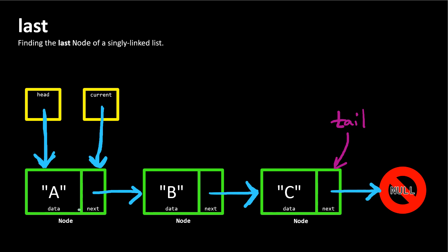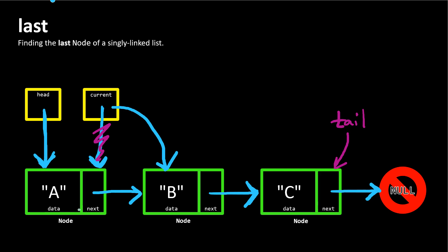We need to check: is this the tail node? We would ask, is current's next property null? In this case, it's not — it refers to another node. So because current's next property is not equal to null, we take the reference that is in the next property of the current node, and assign that same reference to current. So current is no longer a reference to the head node; it's going to be a reference to the next node.